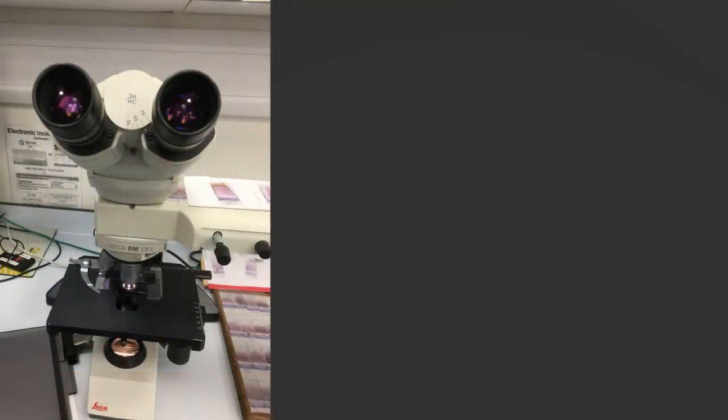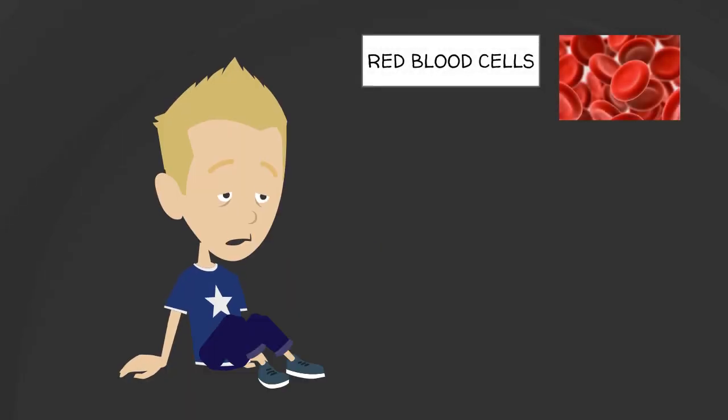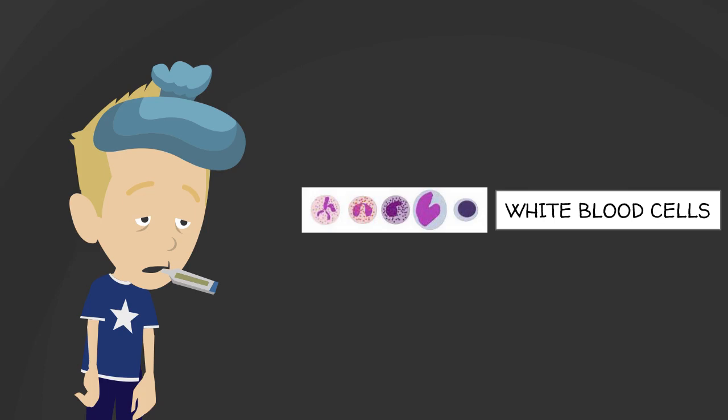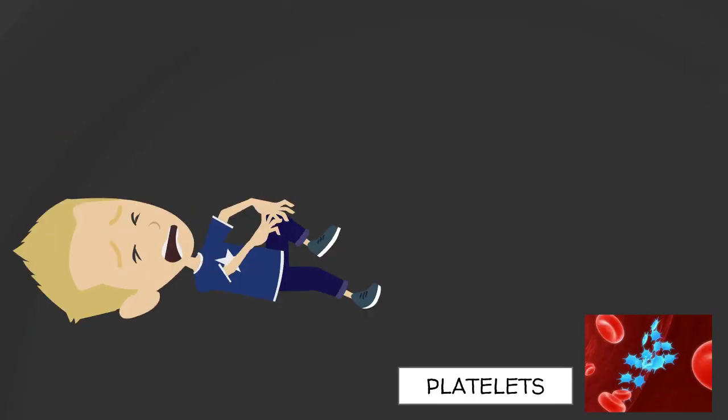We get to see lots of parts of your blood, including red blood cells—these stop you being tired. White blood cells—these fight infection. Some of these white cells are called neutrophils. And platelets—these stop bruises and bleeding.